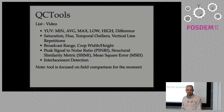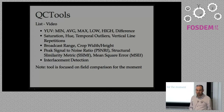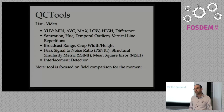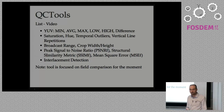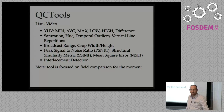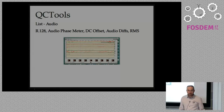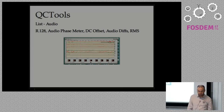We use filters for checks like broadcast range, crop, peak signal, and signal-to-noise ratio — very classic checks. Since this is for analog content, it usually involves interlaced content, so we focus mostly on field comparison. This could be extended to other tests depending on community needs. QCTools was initially based on video analysis, but the upcoming version also includes audio tests: the classic R128, audio phase meter, DC offset, audio diffs, and so on.